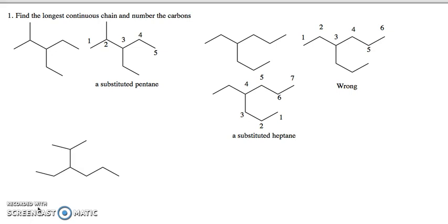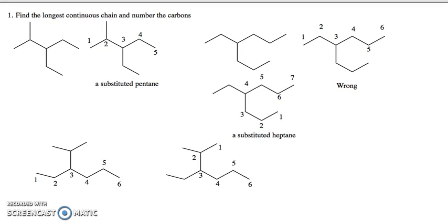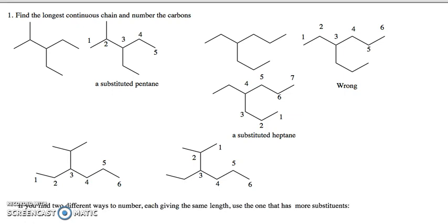Sometimes you might find two different ways to get a chain of the same length. For instance, I could start here and go one, two, three, four, five, six, or I could start up here and go one, two, three, four, five, six. When we have two different ways to find the longest continuous chain, we need a rule to determine which one to choose.